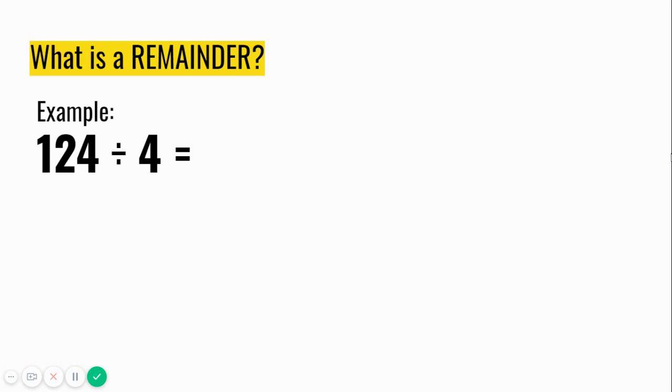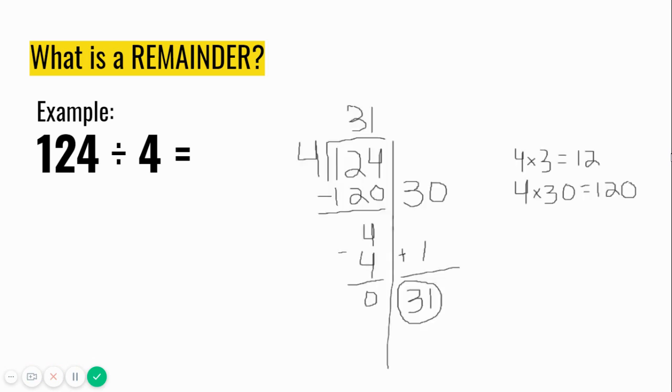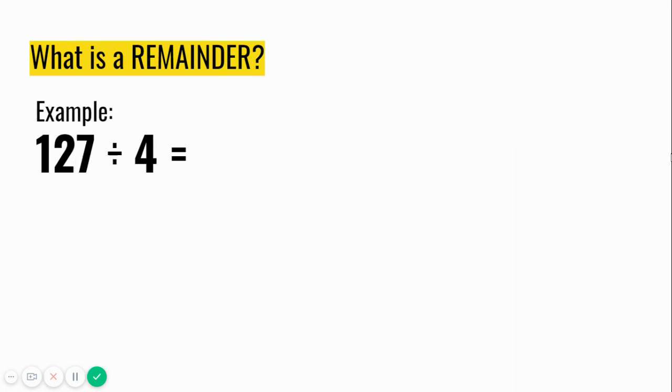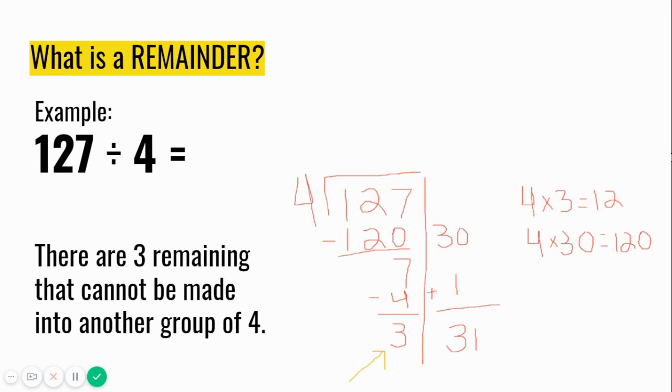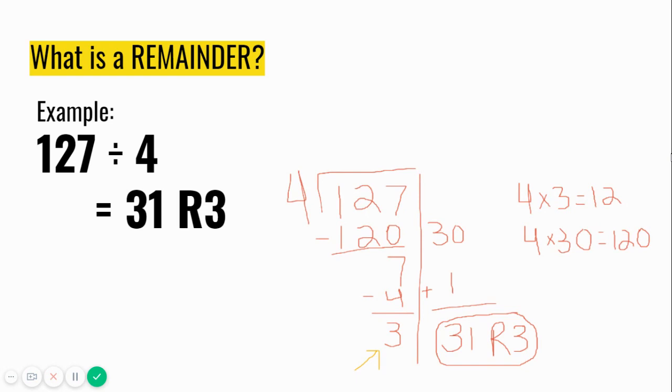For example, 124 divided by 4. When I divide using partial quotients, I get an answer of 31, and there is no remainder. 124 divides evenly into 4 groups of 31 without any left over or remaining. If I divide 127 by 4 using the partial quotients method, I get an answer of 31. But notice there are 3 remaining that cannot be made into another group of 4, so I have a remainder. My answer would be 31 with a remainder of 3, represented as R3.